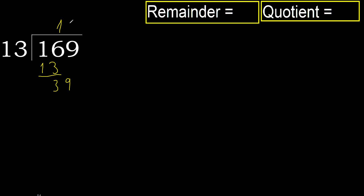13 multiplied by 4 is greater, multiplied by 3, 39 is not greater. 169 divided by 13 is 13.